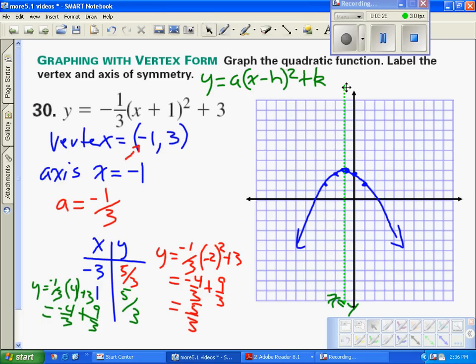We've graphed and labeled the vertex, the axis of symmetry. The vertex we know is negative 1 comma 3.